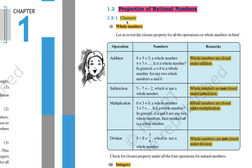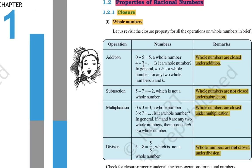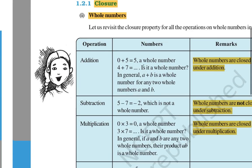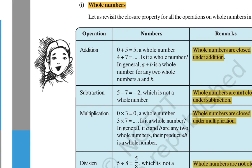Whole numbers are 0, 1, 2, 3 and so on. Now, closure property: if you add two whole numbers and the result is again a whole number, it means whole numbers are closed under addition. Now for subtraction — for example, 5 minus 7 gives minus 2. Here 5 and 7 are whole numbers, but minus 2 is an integer, not a whole number.